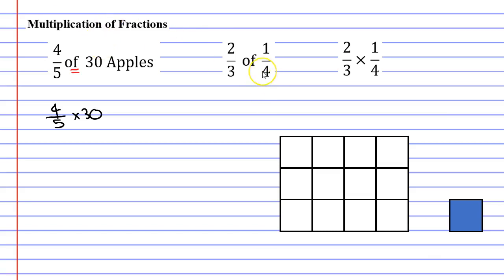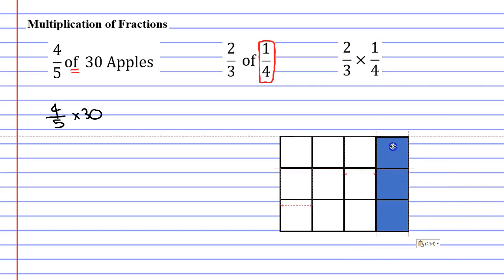You'll notice that we're finding two-thirds of a quarter. So I'm going to look at the second fraction first. I'm going to look at a quarter, and I'm going to make it in my diagram below. And I'm going to do it by coloring in three of the squares.